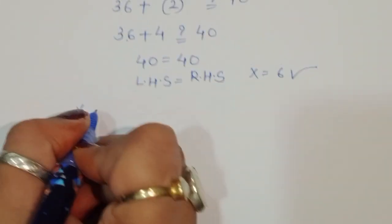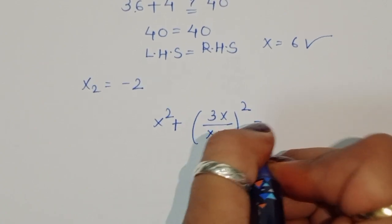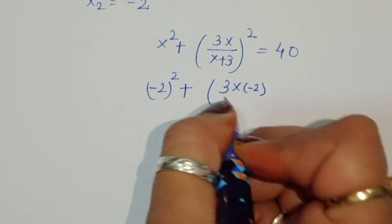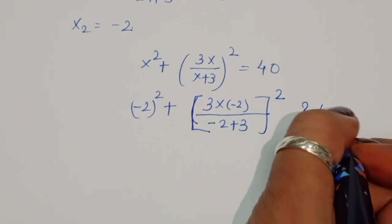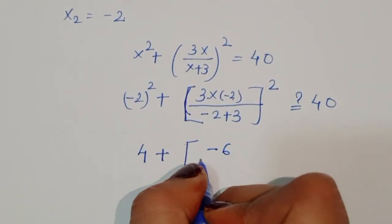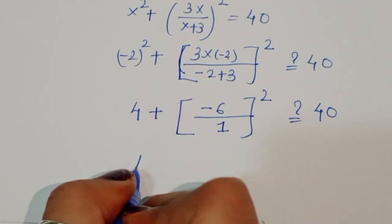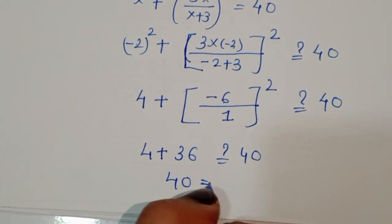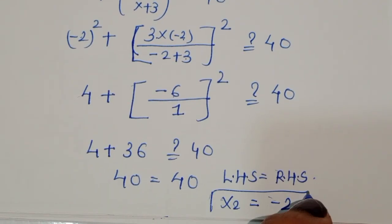Now verifying x₂ = −2: ((-2)² + 3×(−2))/(−2+3))² = (4 − 6)/1)² = (−2)² = 4... actually (4 + (−6))/1)² = (−2)² = 4, and 36 + 4 = 40. So LHS = RHS. Therefore x₂ = −2 is also a correct solution. Thank you.